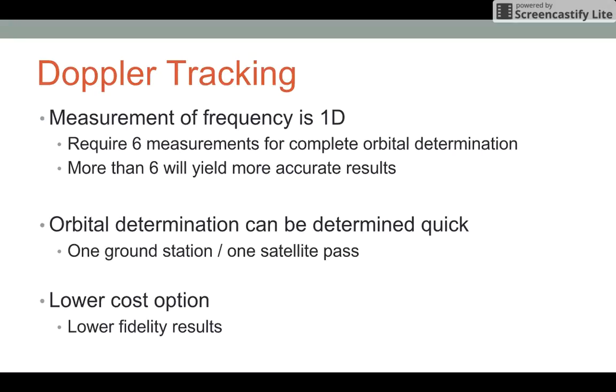Measurement of frequency is one-dimensional. You're going to require six measurements for complete orbital determination. More than six will yield more accurate results. Orbital determination can be determined quick as you only need one ground station and one satellite pass for Doppler tracking, which makes it a lower cost option, but it will have lower fidelity results than other options.